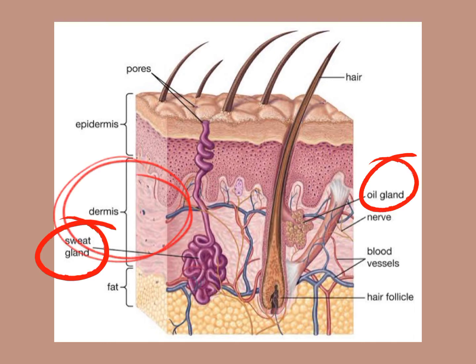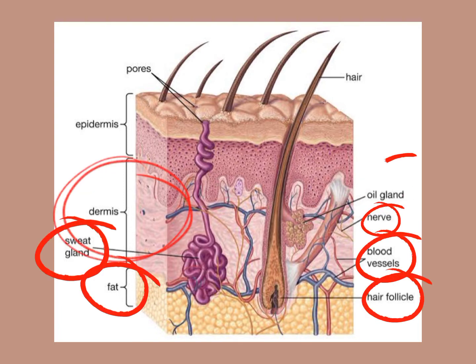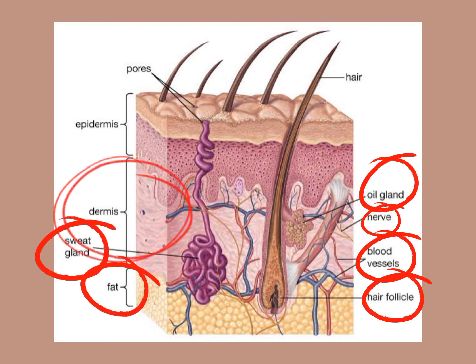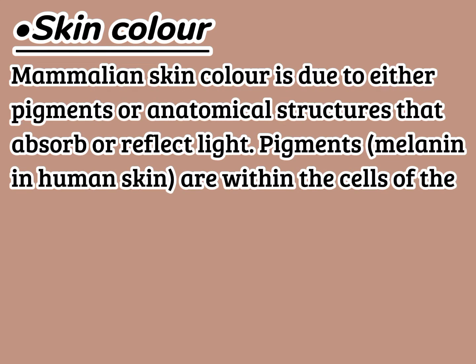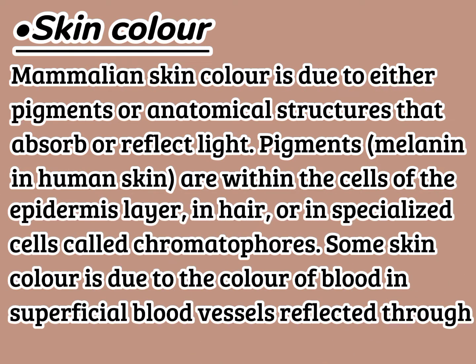Here is the dermis of mammalian skin. These are oil glands or sebaceous glands that secrete sebum. These are the sweat glands which secrete sweat. These are the nerves and blood vessels. Here is the fat and the hair follicle. Fats are present in the hypodermis, which is present beneath the dermis. Mammalian skin color is due to either pigments or anatomical structures that absorb or reflect light. Pigments are within the cells of the epidermis layer, in hair, or in specialized cells called chromatophores. Some skin color is due to the color of blood in superficial blood vessels reflected through the epidermis.